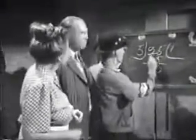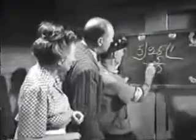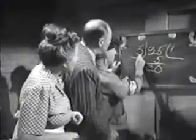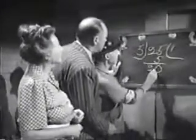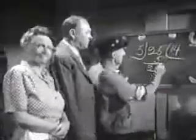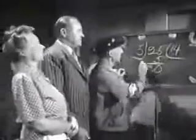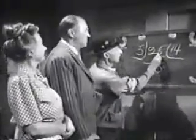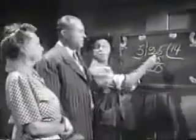Now, we didn't use the 2 before, so we'll bring it down here. Now, 5 into 20 goes 4 times. There you are. 5 into 25 is 14.